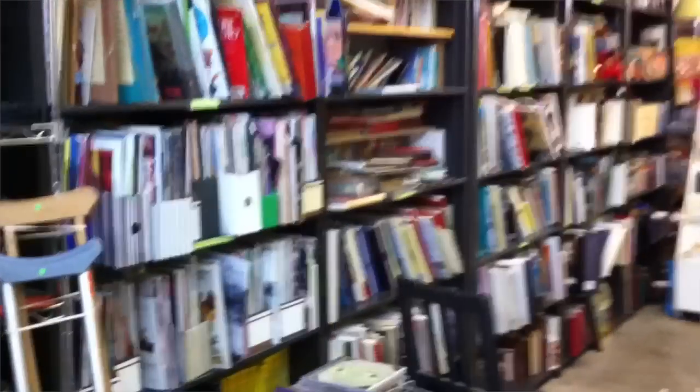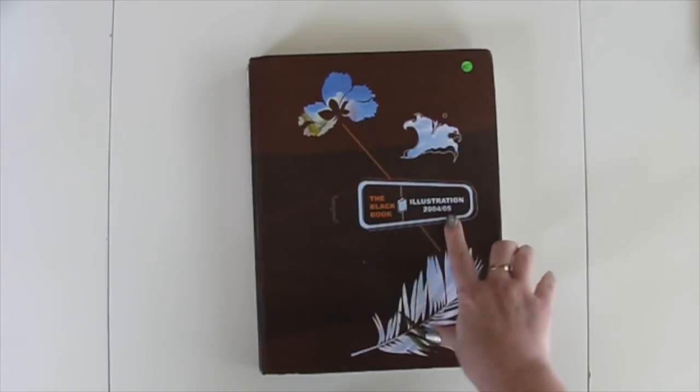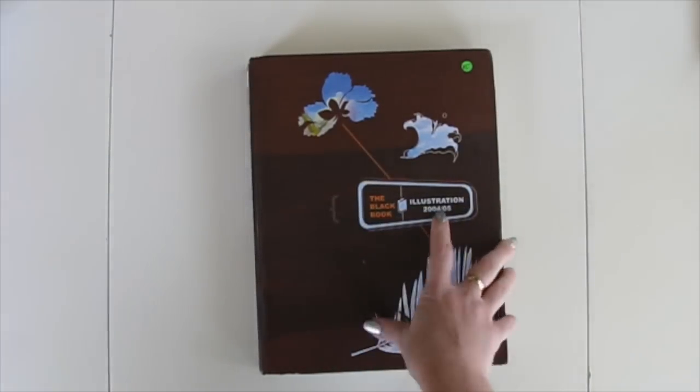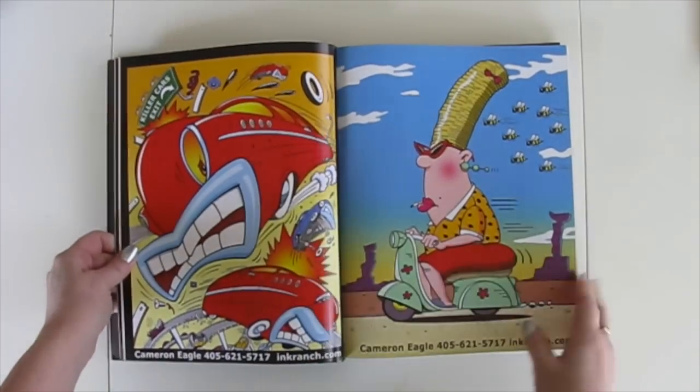And the last thing I picked up was this book. And I really tried hard not to buy any books, because, you know, I have books. Lots of books. But I couldn't resist. This was five dollars. And this is the Black Book of Illustration from 2004-2005. And I just really loved some of the illustrations in here.